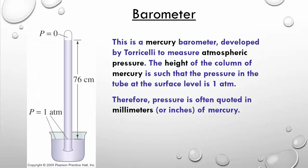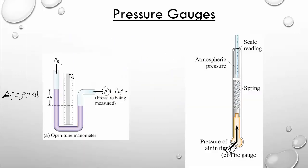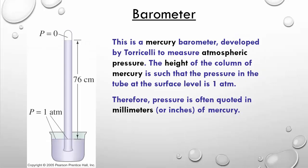Probably the first way that pressure was measured — kind of similar to the manometer idea but a little different — is what's called a barometer, and we still use these today to measure atmospheric pressure. It was Torricelli, a good Italian physicist, who first figured out how to make this type of barometer.